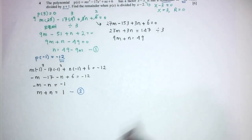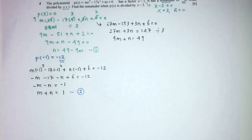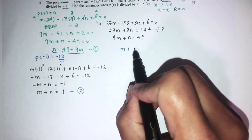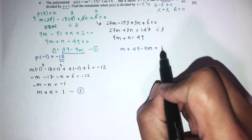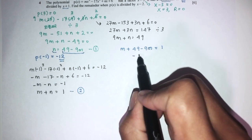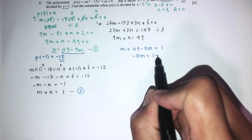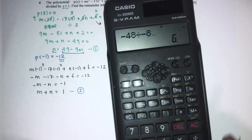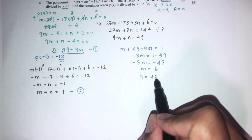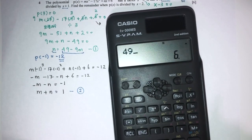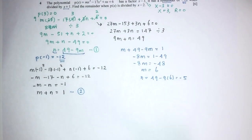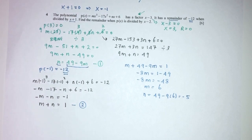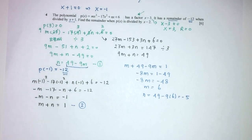Now solving the two equations simultaneously: substituting n equals 49 minus 9m into m plus n equals 1 gives m minus 8m equals 1 minus 49, so minus 8m equals minus 48, giving m equals 6. Then n equals 49 minus 9 times 6 equals minus 5. Always double-check your answers to avoid mistakes.